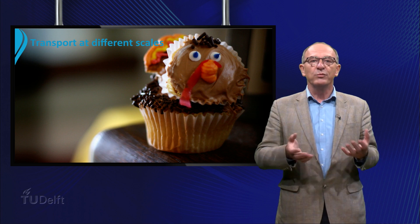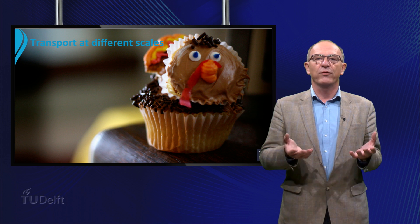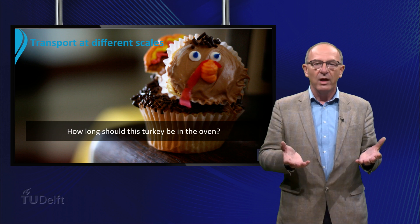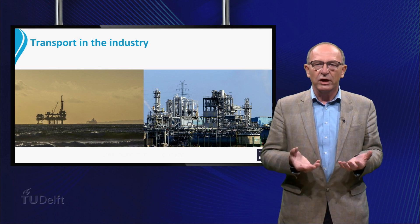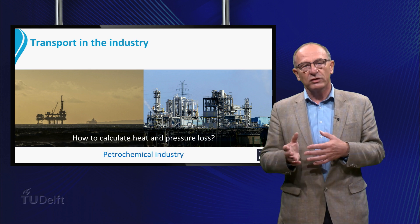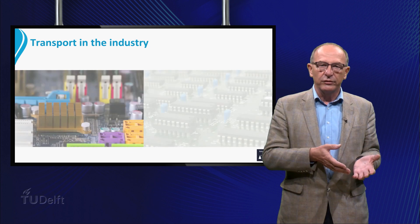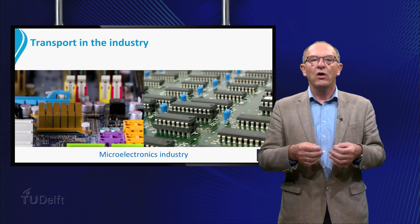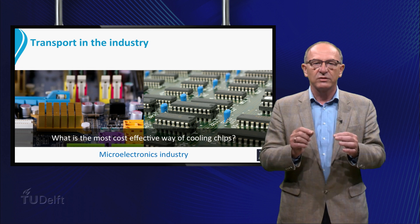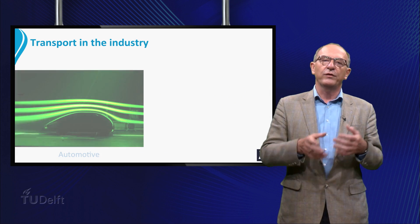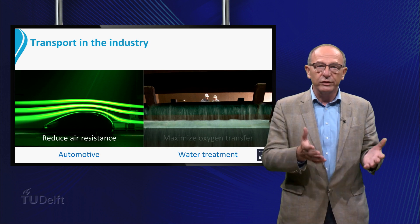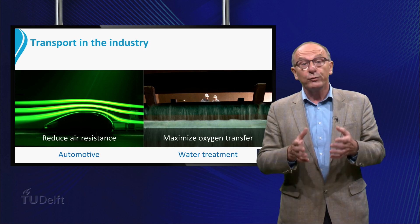But also for fun, to estimate the boiling time of an egg, or to establish how long your turkey should be in the oven. In the petrochemical industry, a question could be how to calculate heat and pressure loss. While in the microelectronics industry, an important issue could be what is the most cost-effective way of cooling chips. But also the reduction of the air resistance of cars or the oxygen transfer in water treatment plants could be tackled with transport phenomena.